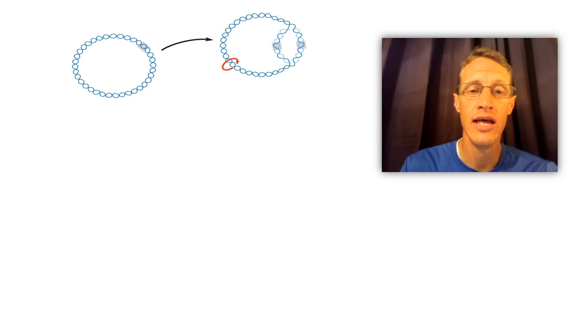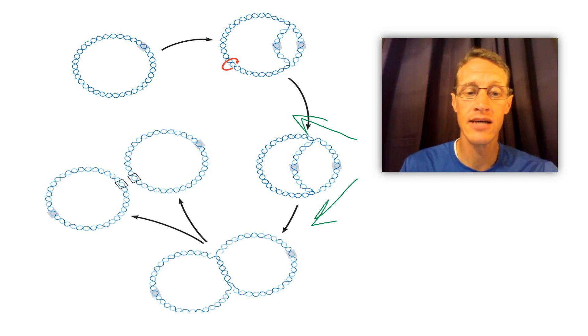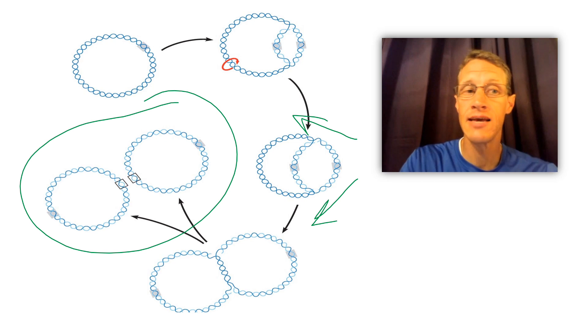So replication starts at a random point on that circle, and then moves around the circle, going in two directions, until it meets on the other side, and the two copies split off from each other, and you have two identical copies of the same DNA.